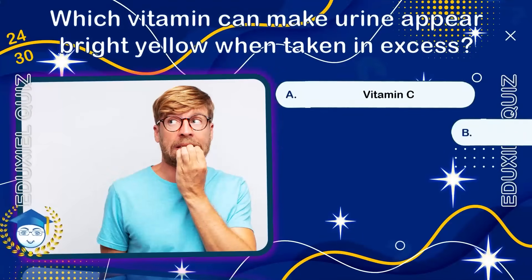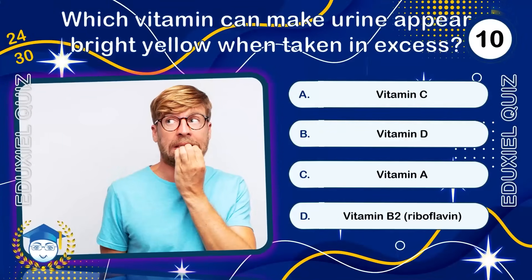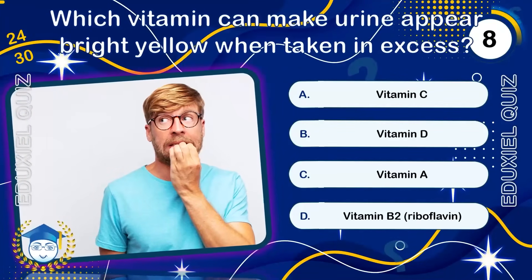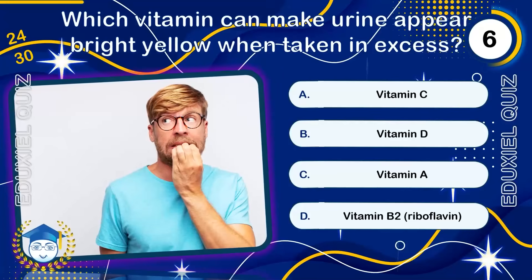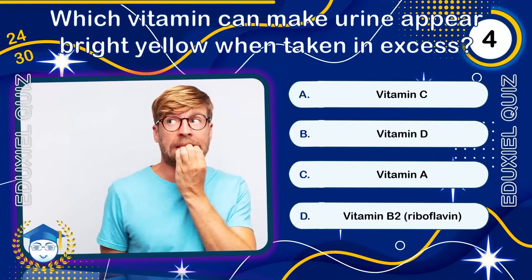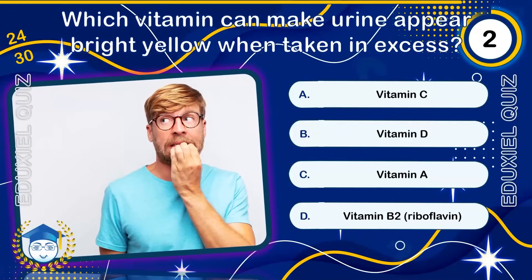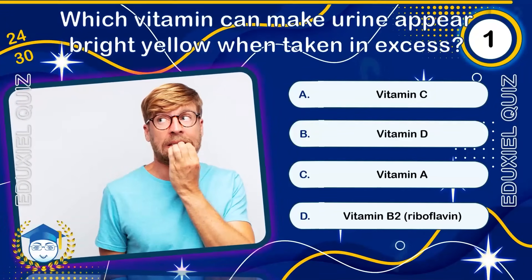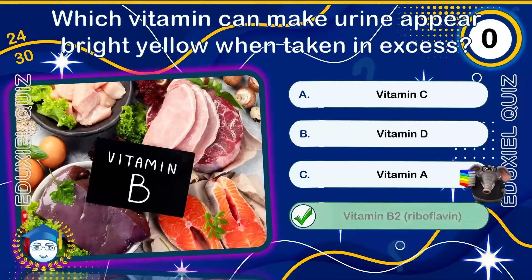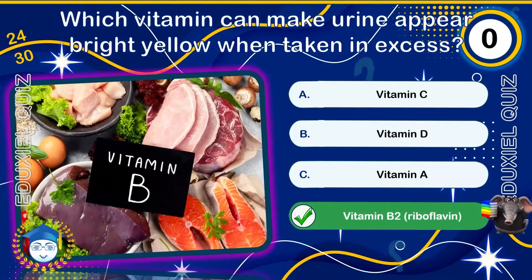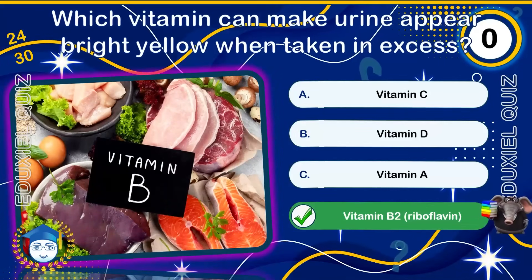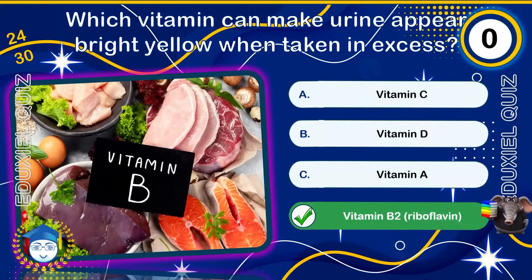Which vitamin can make urine appear bright yellow when taken in excess? Vitamin B2, or riboflavin, is essential for energy metabolism and cell function. Excess riboflavin is excreted in urine, often giving it a bright yellow color. It is found in dairy products, eggs, and green vegetables.